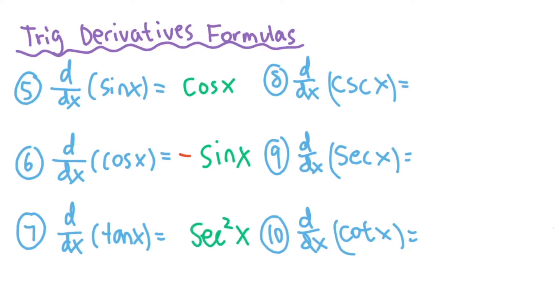And then the derivative of cosecant x is just going to be, watch out, negative cotangent x cosecant x. And secant x, you're going to have secant x tan x as your derivative. And then the derivative of your cotangent x, lastly, it's going to be negative cosecant squared x.